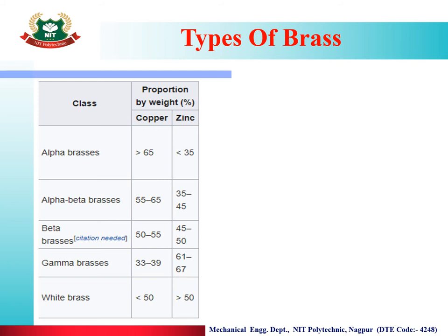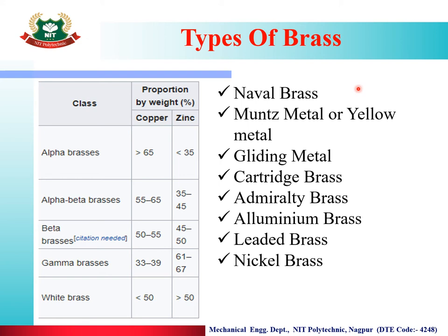Types of brasses: Alpha brasses contain up to 35–36% zinc. Alpha-beta brasses contain 35 to 45% zinc. Beta brasses contain 45 to 50% zinc. Gamma brasses contain 61 to 67% zinc. White brass has 50% copper and 50% zinc. Named types of brass include naval brass, moons metal or yellow metal, gilding metal, cartridge brass, admiralty brass, aluminium brass, leaded brass, and nickel brass.